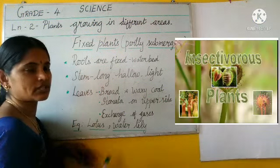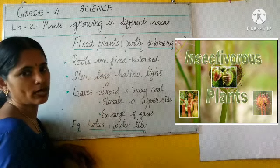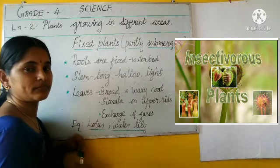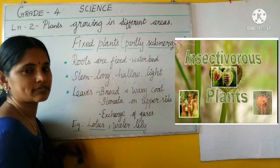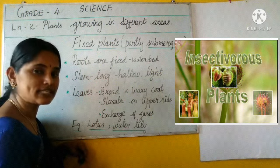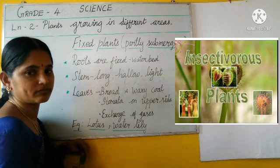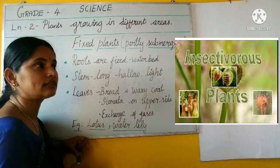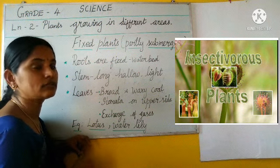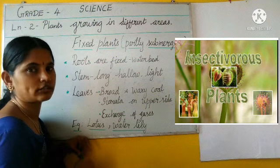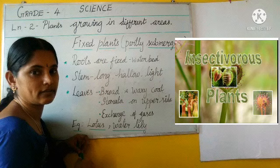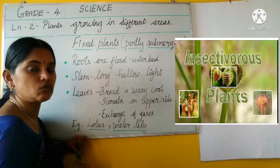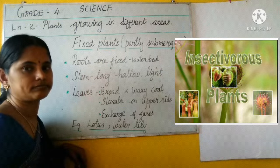We have finished terrestrial plants and aquatic plants. Now we will see a new kind of plant — insectivorous plants. We can see these plants deep in the forest, not normally here.